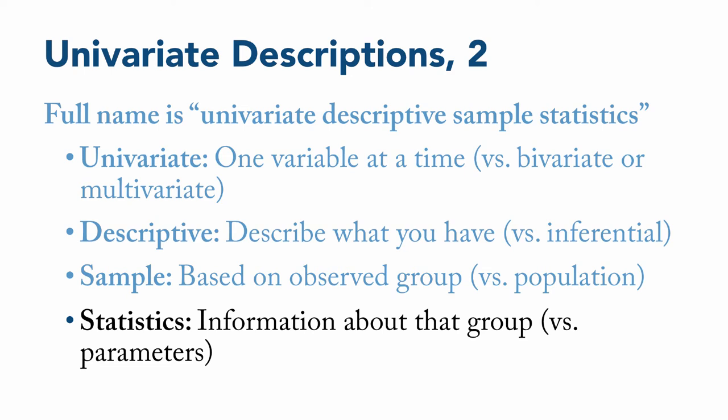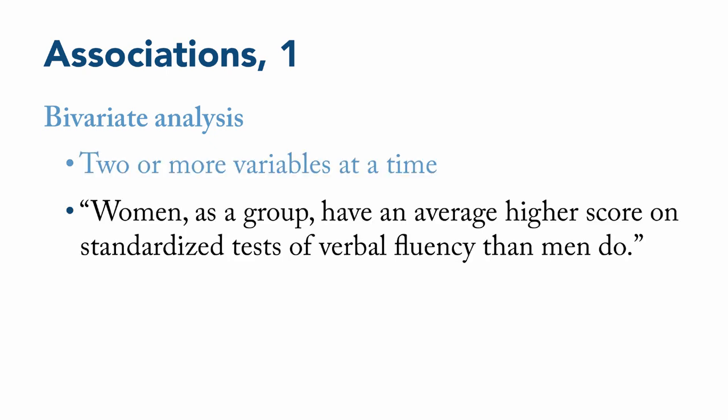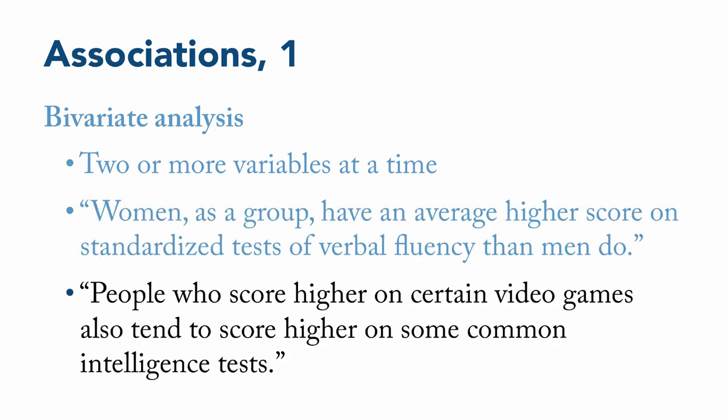So descriptive statistics can be thought of as the first goal of data analysis. And the second goal is associations. Instead of describing one variable at a time, it's possible to describe the associations between two or more variables simultaneously, such as women as a group have an average higher score on standardized tests of verbal fluency than men do, or people who score higher on certain video games also tend to score higher on some common intelligence tests.